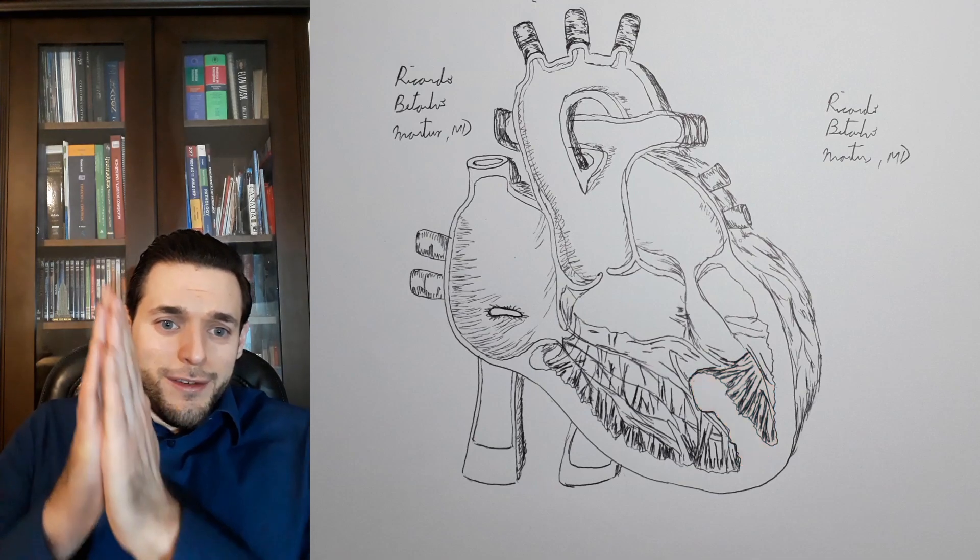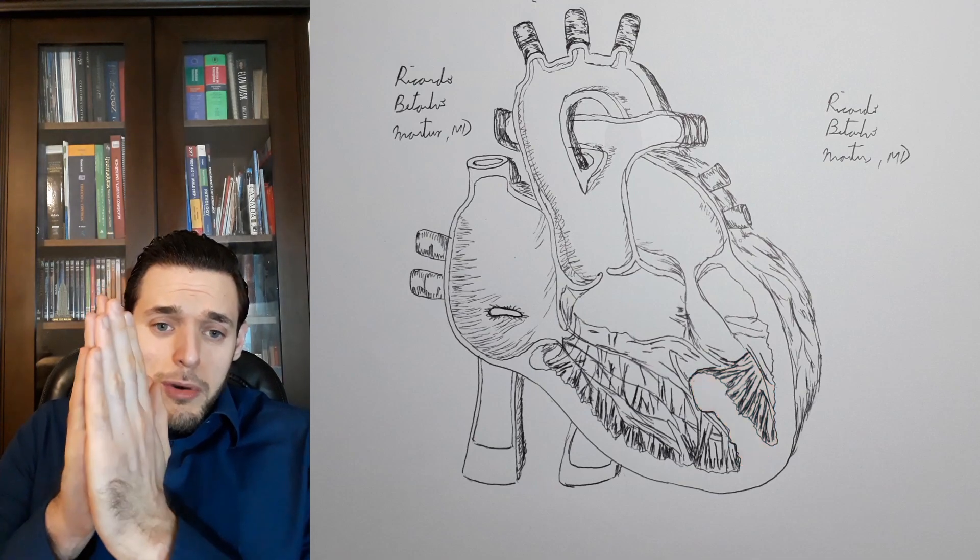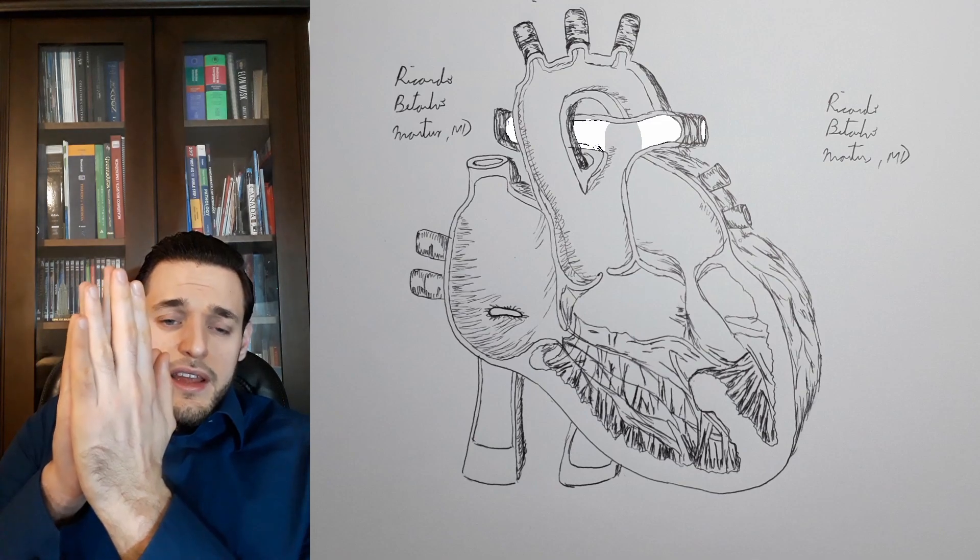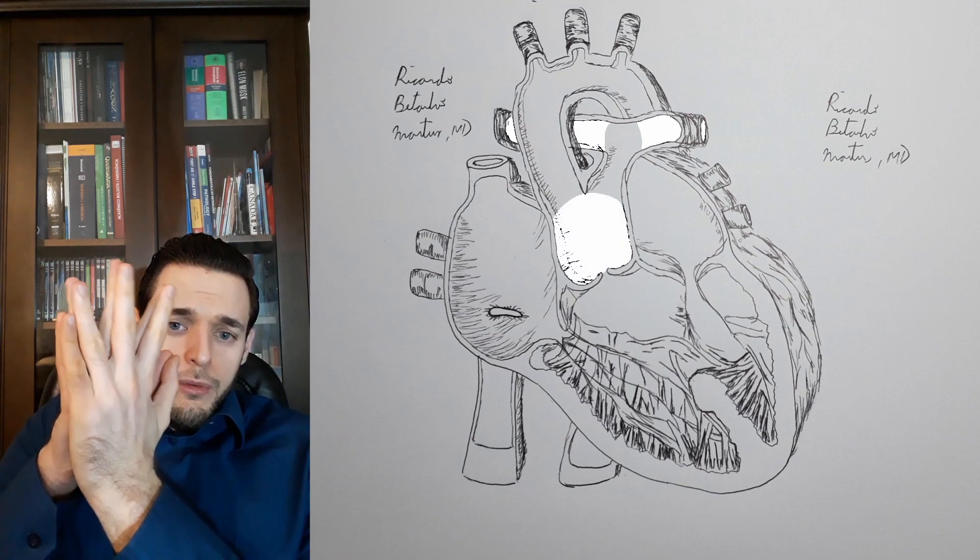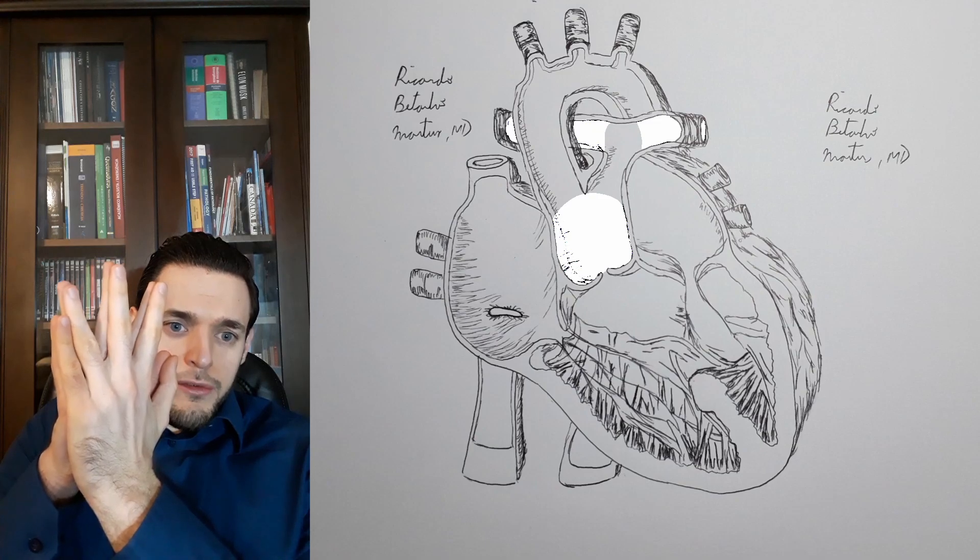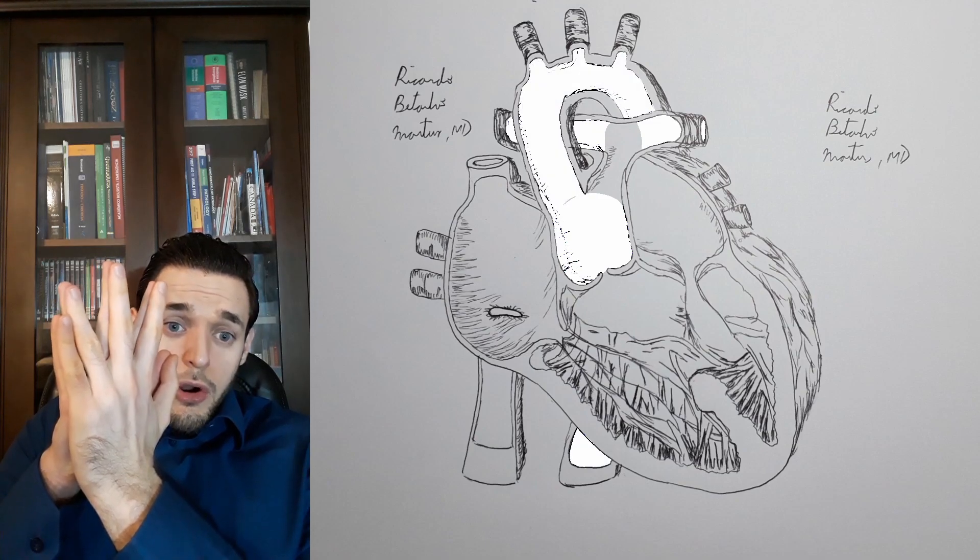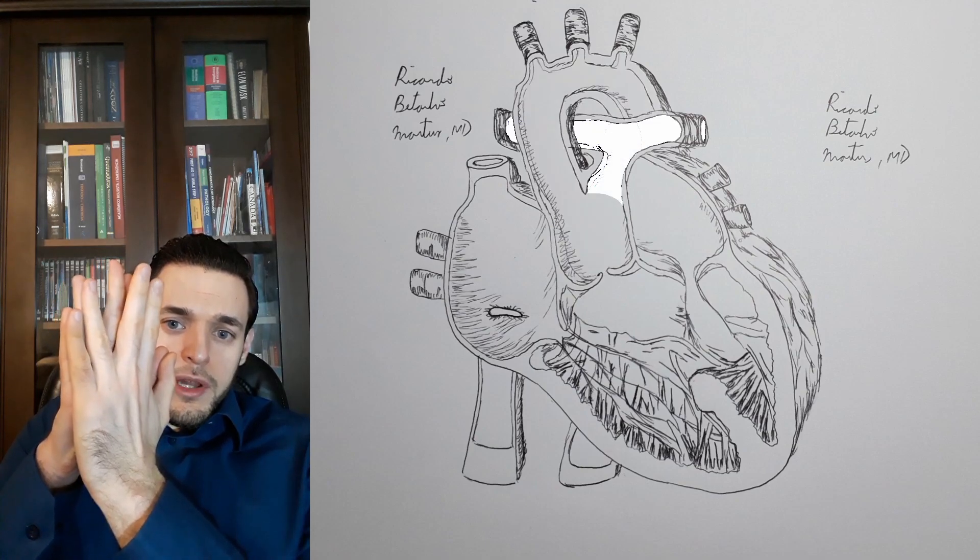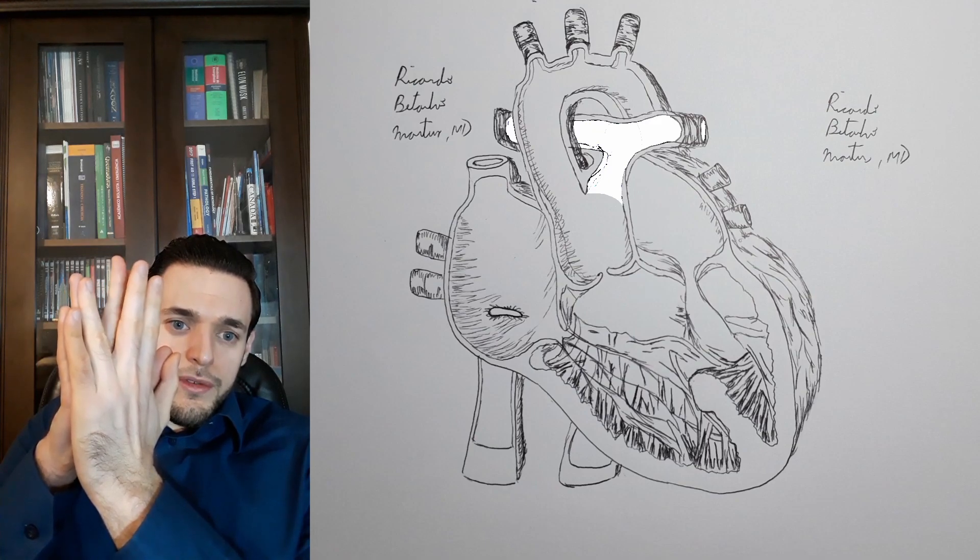Anatomically, in the presence of truncus arteriosus, the pulmonary arteries can arise either directly from the truncus arteriosus, which is the same structure that will give rise to the aorta, or from a distal pulmonary trunk division of the truncus arteriosus.